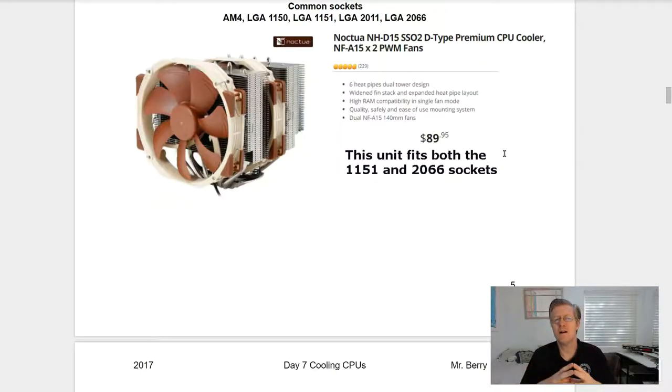Common sockets would be the AM4. This would be reserved for your AMD CPUs and then the LGA 1150, LGA 1151, LGA 2011 and the newer LGA 2066. Here we see a very good example of a CPU fan and heat sink unit called the Noctura. This sells for around ninety dollars and this unit fits both the socket 1151 and 2066.